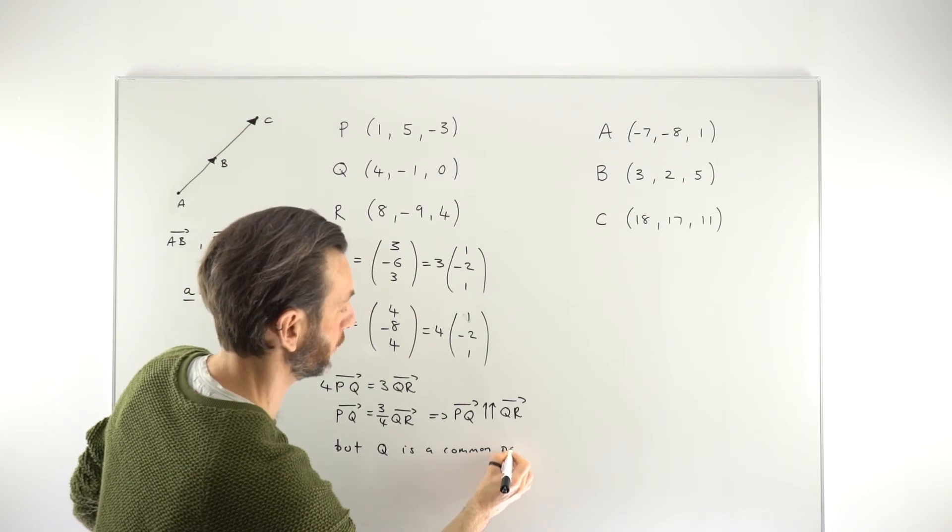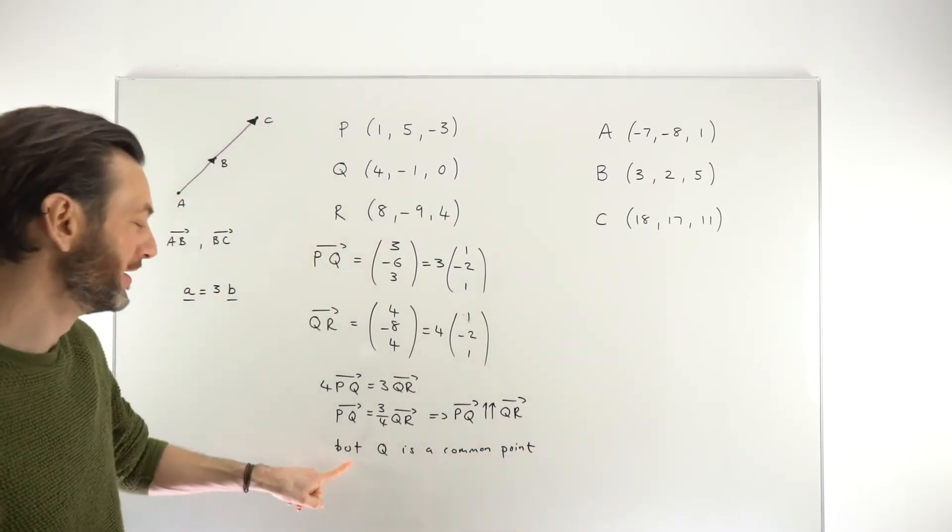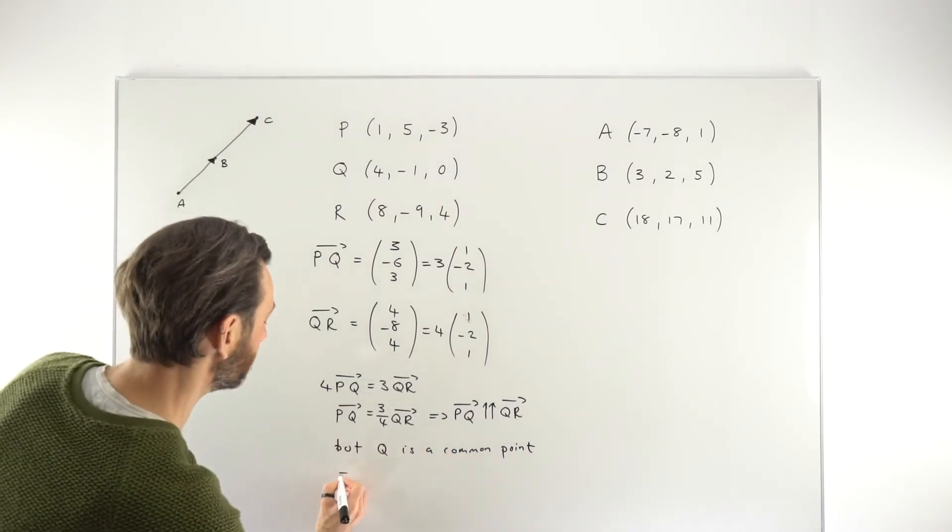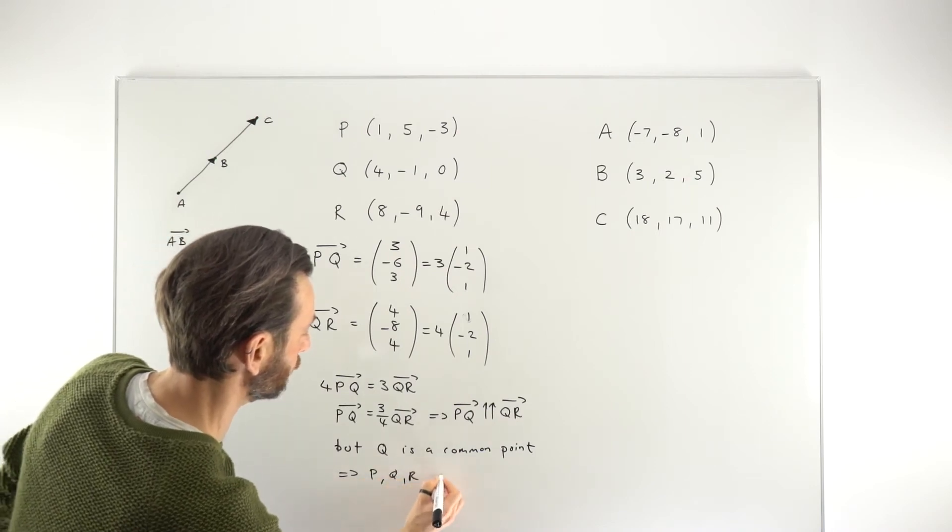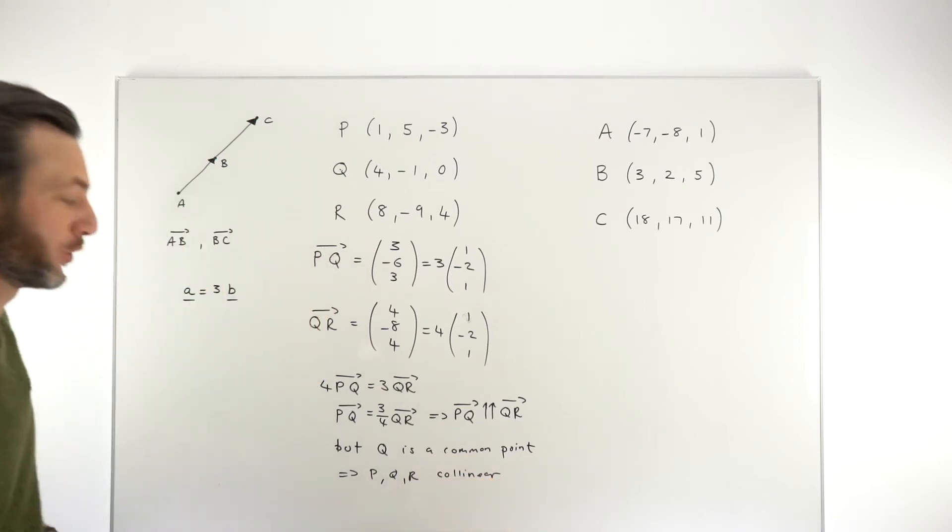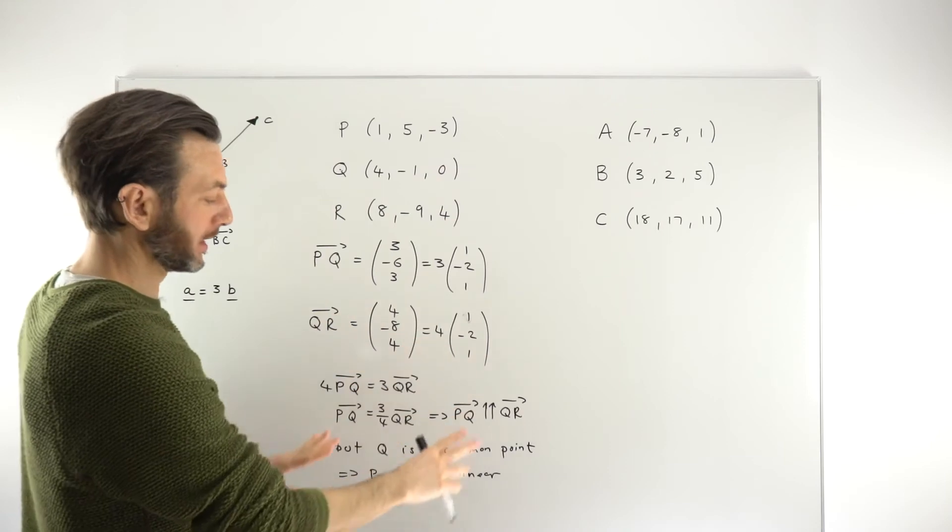Okay, so one of these kind of little math-y sentences you've sometimes got to write the end of a question, which are really annoying, but Q is a common point, and that implies that P, Q, and R are collinear. So one huge mistake that I see often in these questions is that everyone will generally get this kind of roughly right, but at the end,